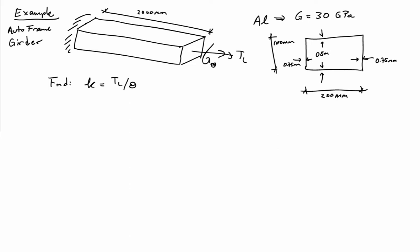And the wall thickness is—so it's a thin wall tube, it's aluminum, so the shear modulus is 30 GPa. And the top and bottom walls are half a millimeter, and the side walls are three-quarters of a millimeter thick.